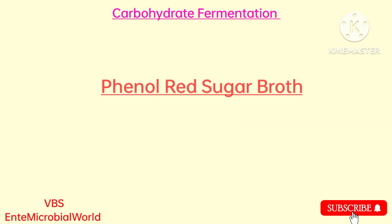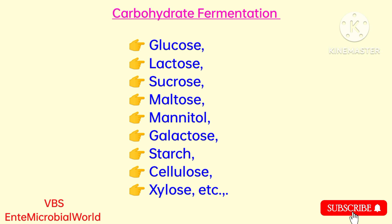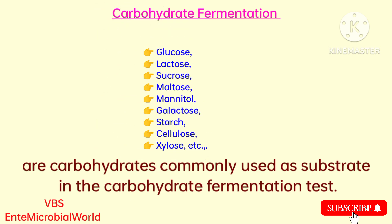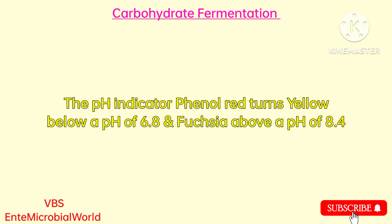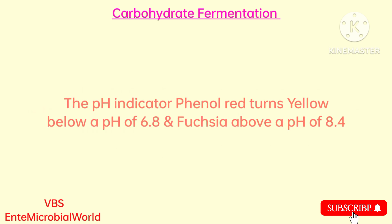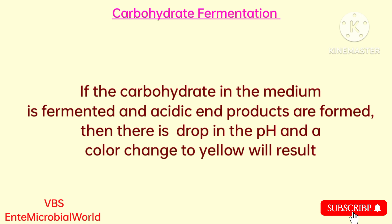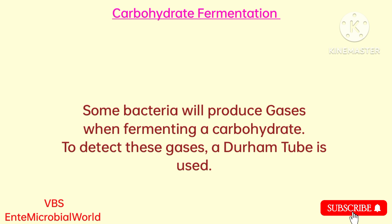Phenol red sugar broth contains a fermentable carbohydrate, peptone, and phenol red. Carbohydrates commonly used as substrates include glucose, lactose, sucrose, maltose, mannitol, galactose, starch, cellulose, and xylose. The pH indicator phenol red turns yellow below a pH of 6.8 and fuchsia above a pH of 8.4. If the carbohydrate in the medium is fermented and acid end products are formed, there is a drop in pH and a color change to yellow will result. Some bacteria will produce gases when fermenting a carbohydrate.